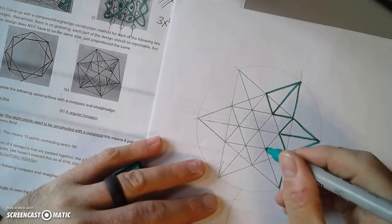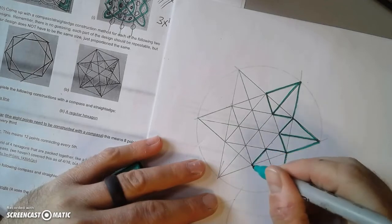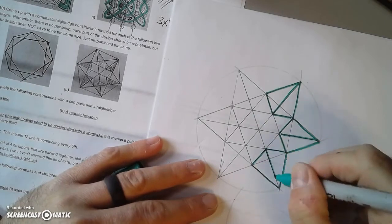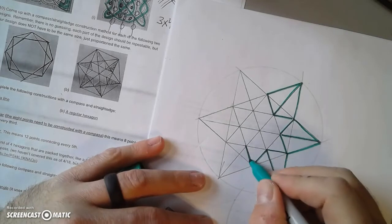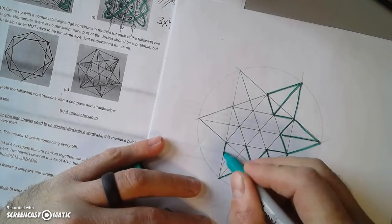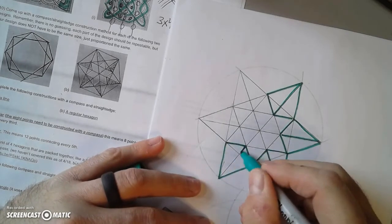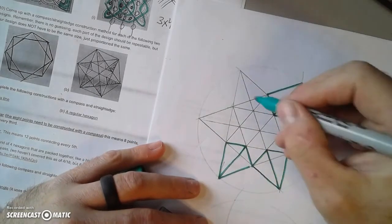These kite shapes were constructed from two nested six-pointed stars. You can see it kind of unfolding here.